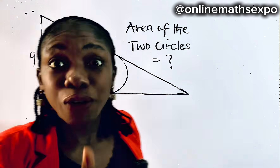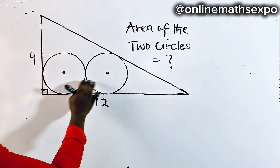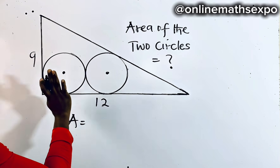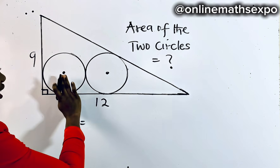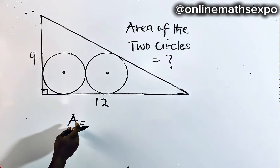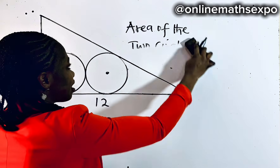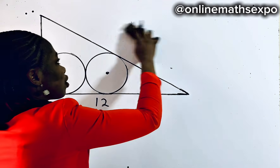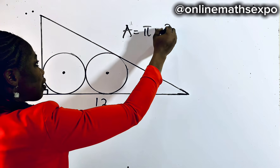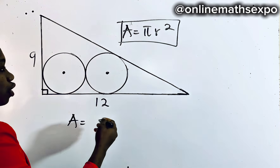To get the area, since the circles are equal, we find the area of one circle and then multiply by 2. Remember that the area of a circle is always given as π r squared. So this is what we want to use.